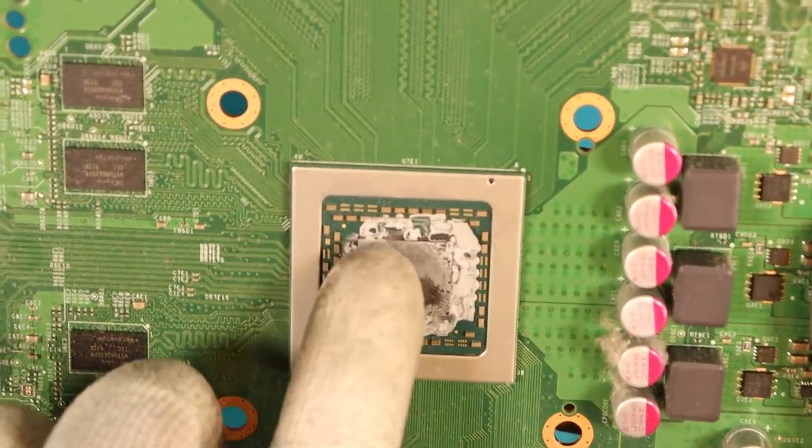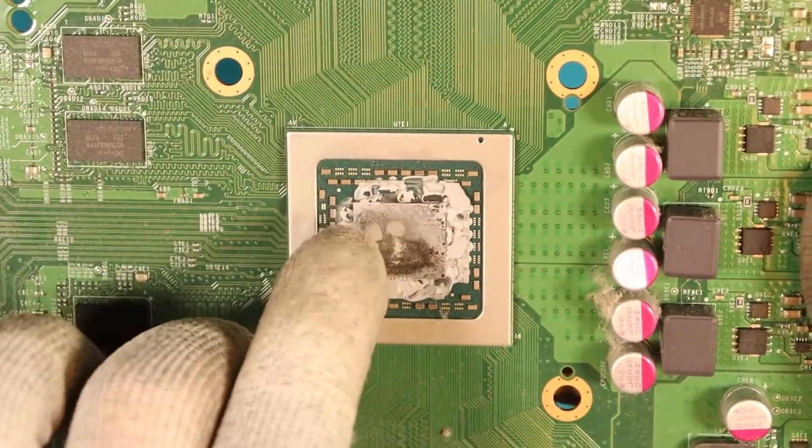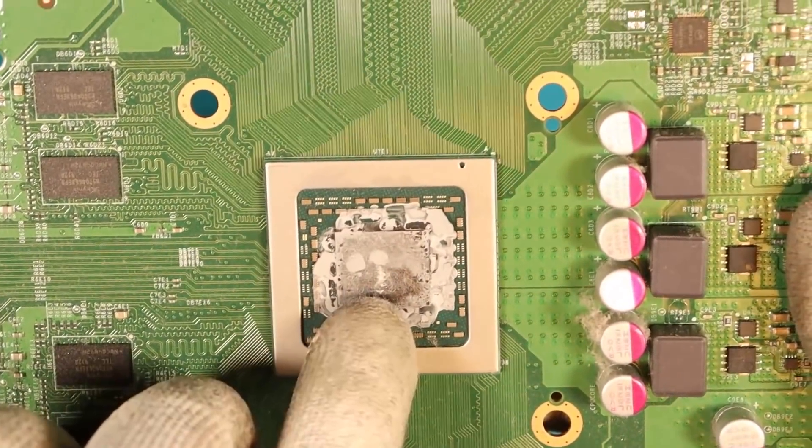Especially as well, this APU has hardly any thermal paste on the actual die, which is the square metal looking thing in the center. Not this one, that one.